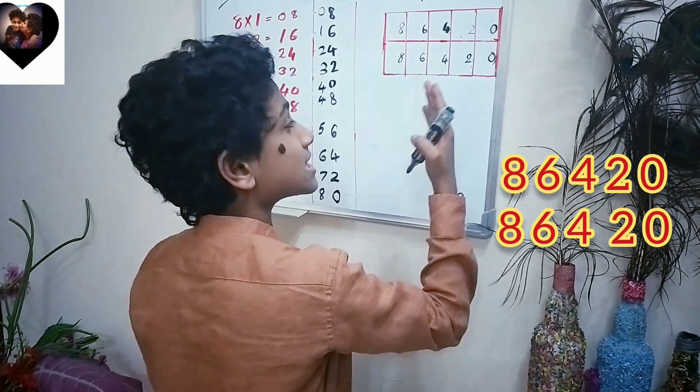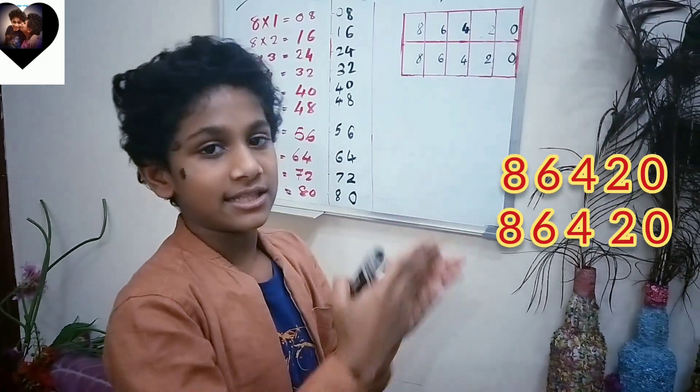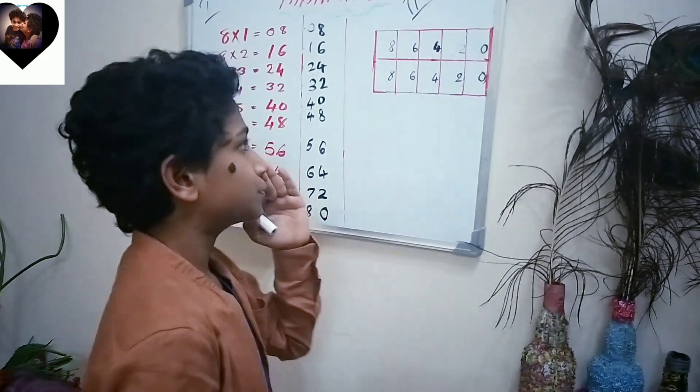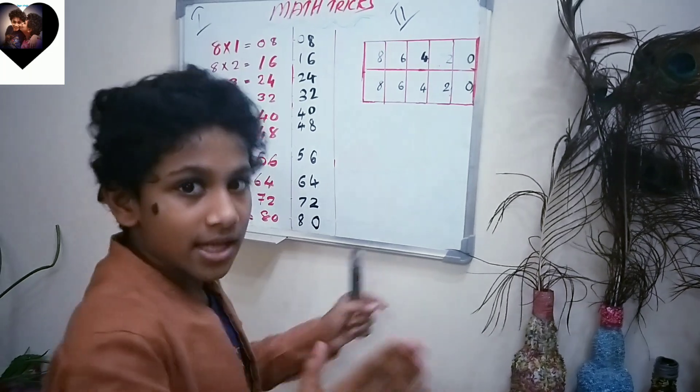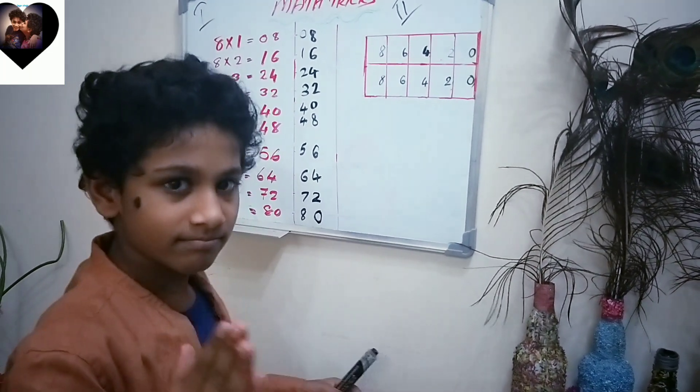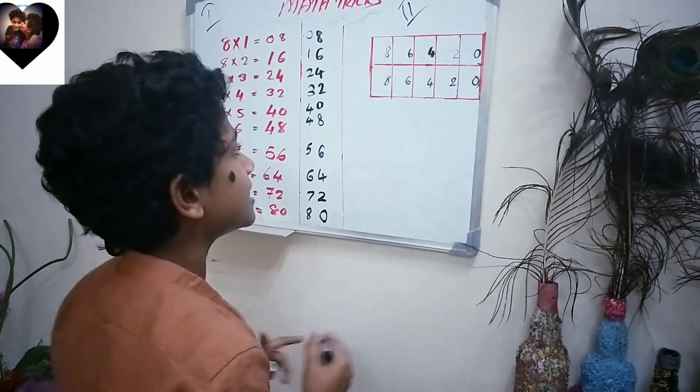If you guys check, it is skip counting or even numbers, or if you want, you can see it as the 2 times table. After that, what you should do is stop the work. The next thing you do is really easy.